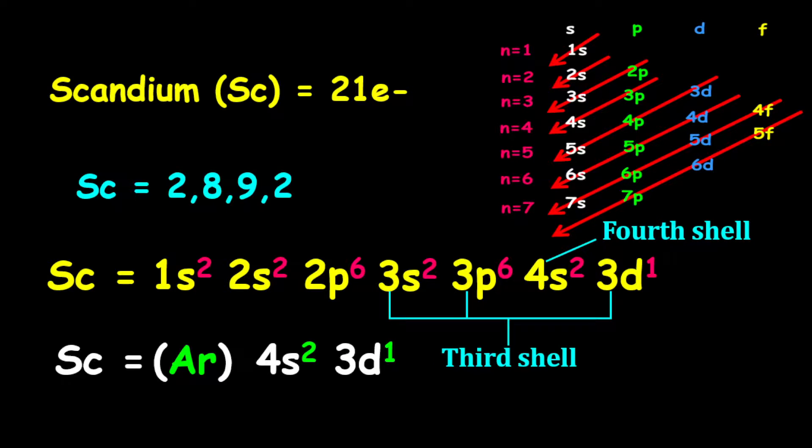Remember that argon represents the inner shells of scandium. So therefore, we have 3 valence electrons, and scandium can lose these 3 valence electrons to look like a noble gas, which is argon.